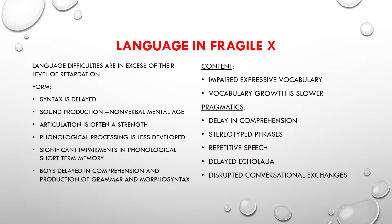Phonological processing is less developed. This is an important aspect to keep an eye out for late talkers between the ages of 30 and 35 months, or between the ages of 2 and 3. Predictors for late talkers can be limited phonetic inventory, usually consisting of only about 6 to 9 different consonants, and you might also see unusual substitutions or vowel errors within words. Fragile X has significant impairments within phonological short-term memory.